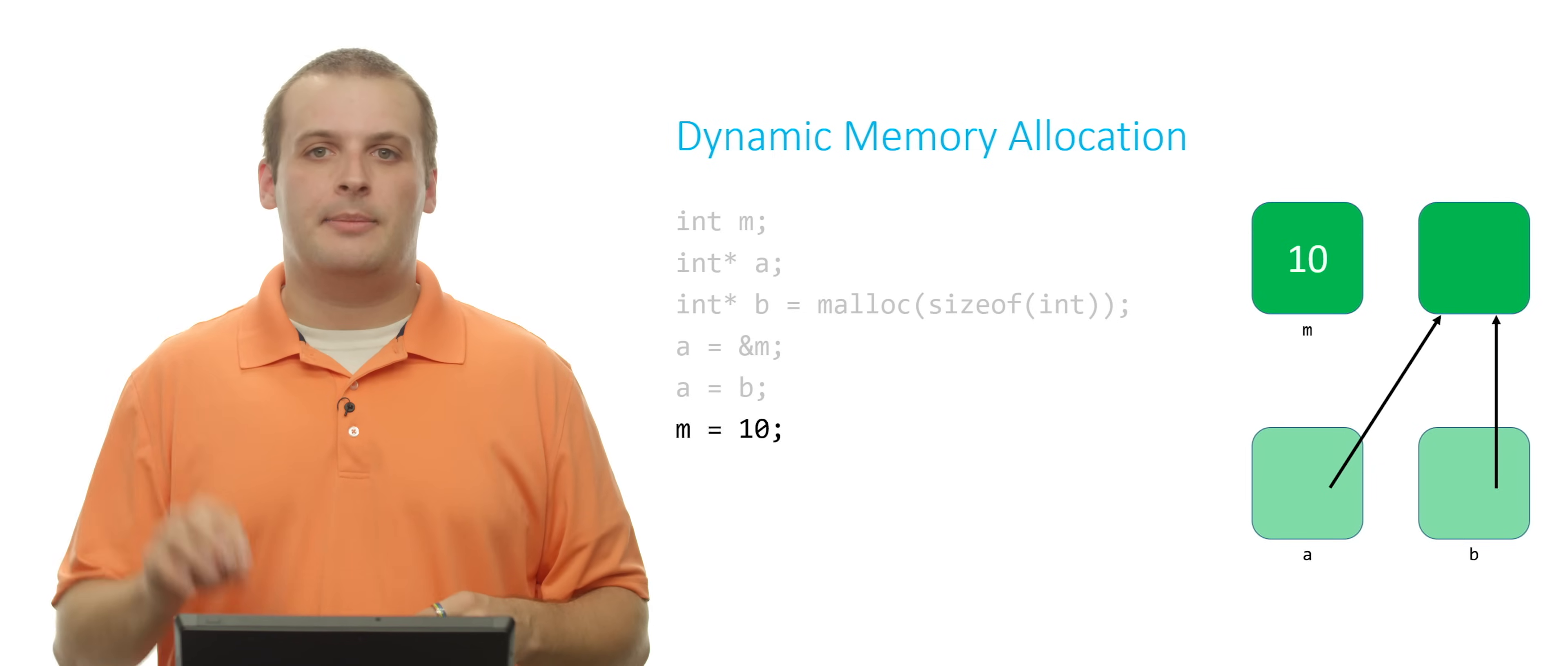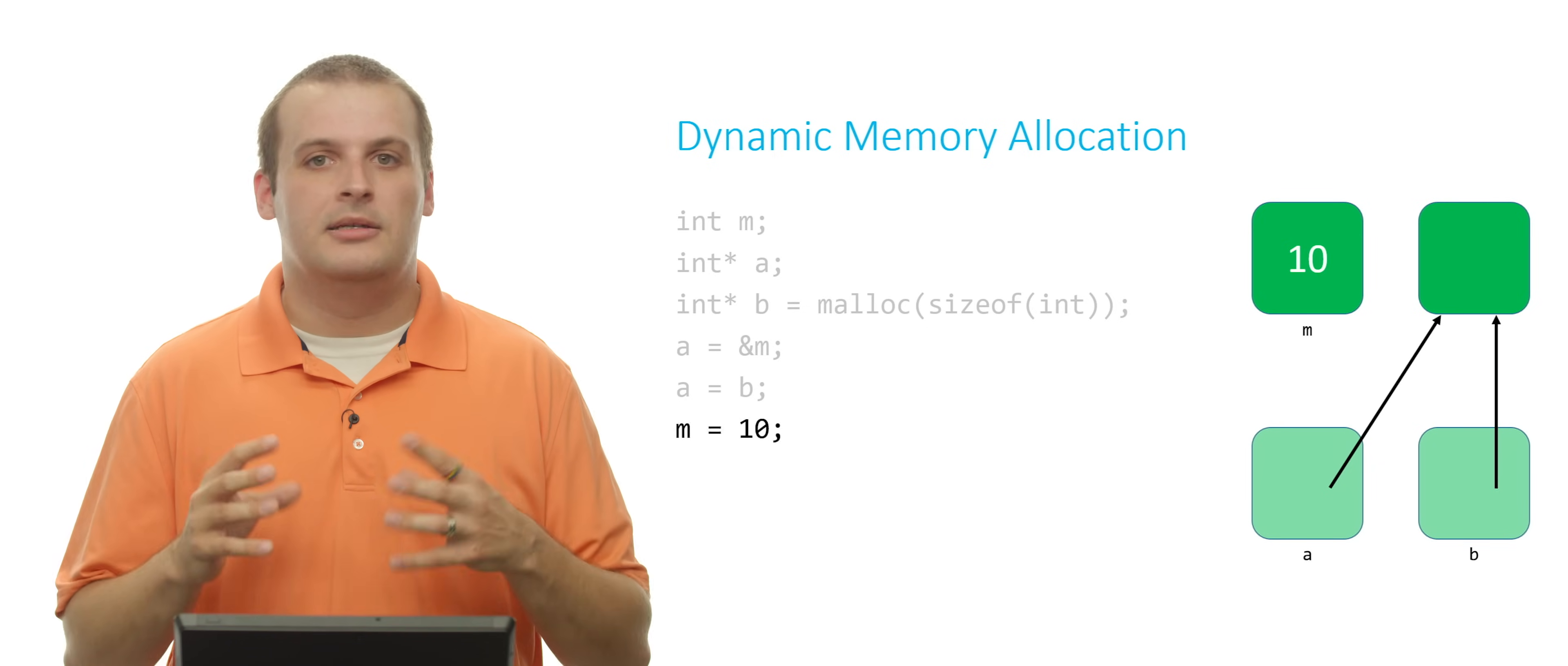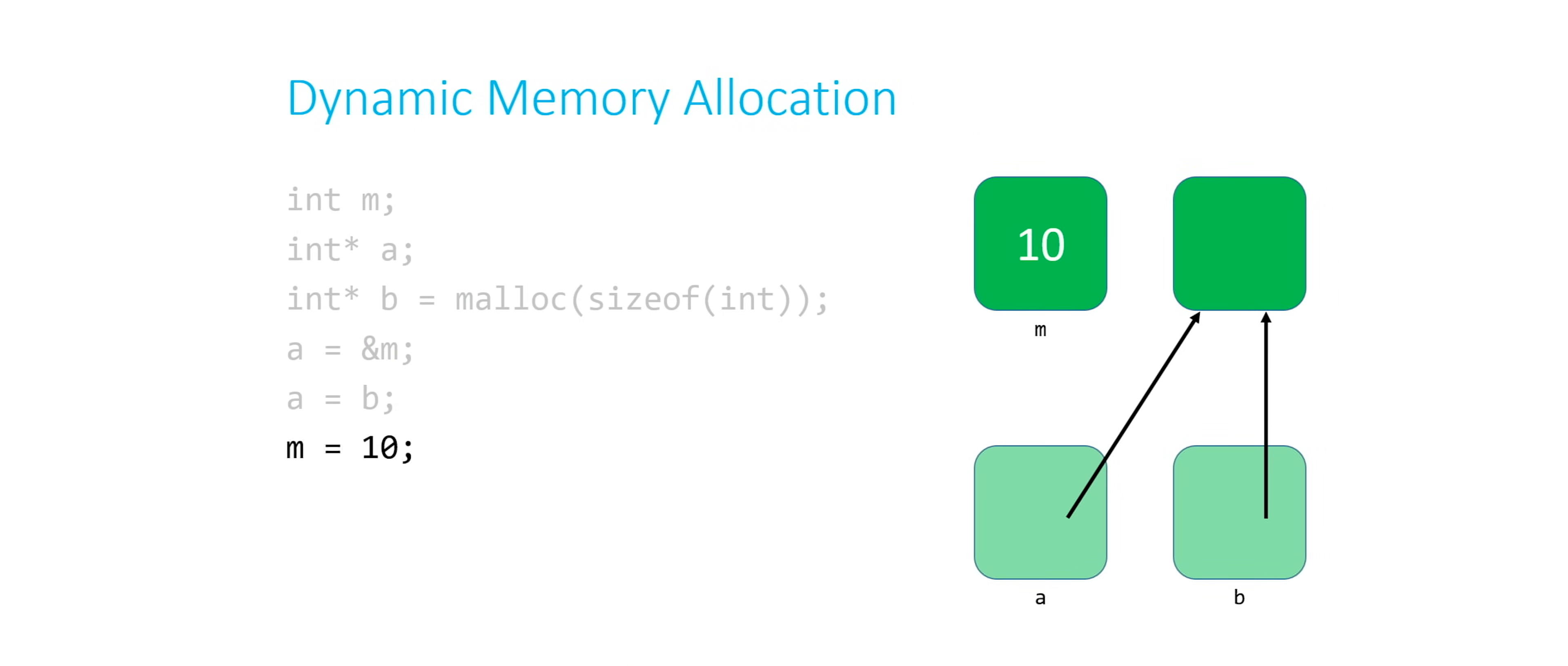Star b equals m plus 2. It's a little weird, right? But what's m plus 2? Well, m is 10. So 10 plus 2 is 12. And star b equals 12.